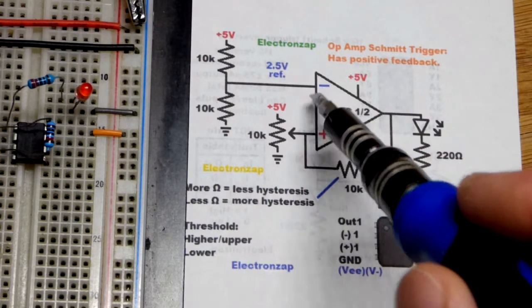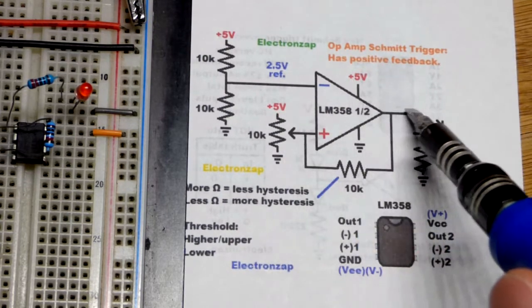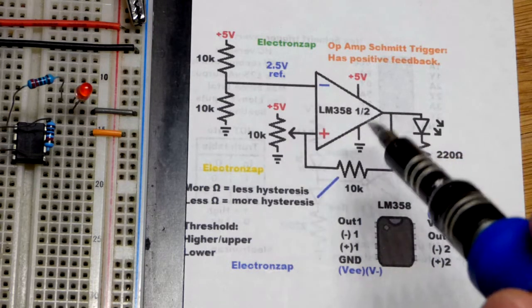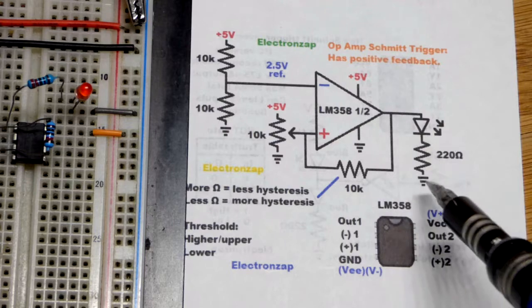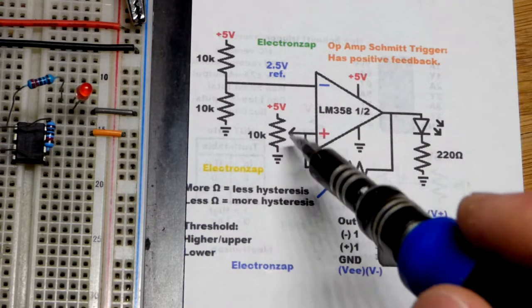We got a reference voltage to the inverting input. When the voltage at the non-inverting input goes higher, you get a high output, red LED lights up. And when it drops lower, then you get a low output, which does nothing for the LED because it's connected to ground on both sides. There's no voltage difference.